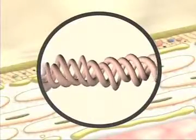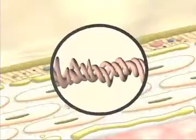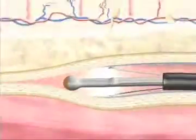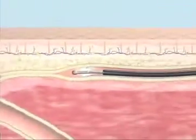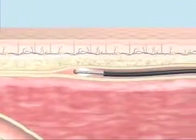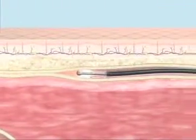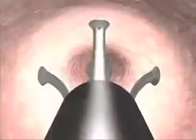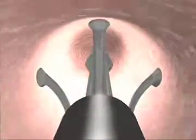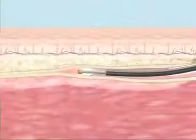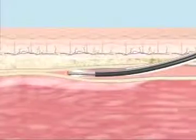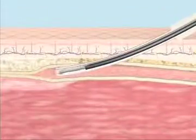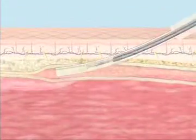We turn the catheter on and then slowly remove it, and the heat from the catheter causes the vein to contract down. This happens because these little springy type connective tissue fibrils will contract with the heat. That makes the vein shrink and clot. This demonstrates the view from the inside of the vein as it's being treated.